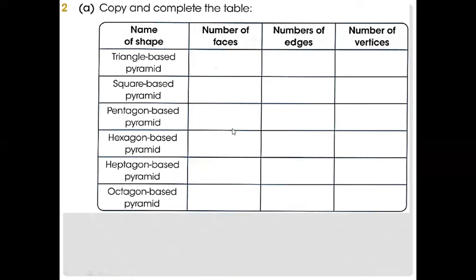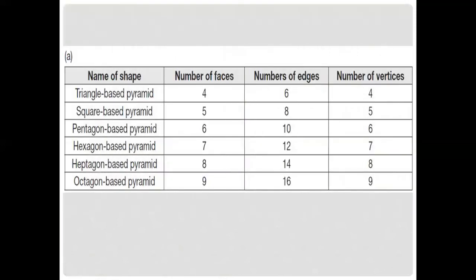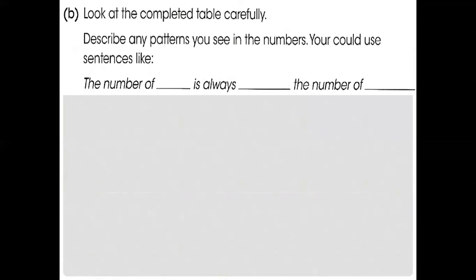Now, copy and complete the table. First, the triangular base pyramid — as you saw in the video, tell me how many faces, edges, and vertices this triangular-based pyramid has. Faces are the flat surfaces, edges are the lines, and vertices are the corners. Here are the answers for these shapes. Now look at the complete table carefully and describe any pattern you see in the numbers.